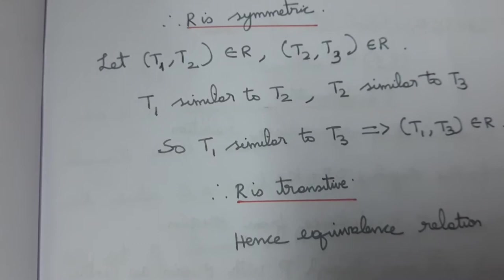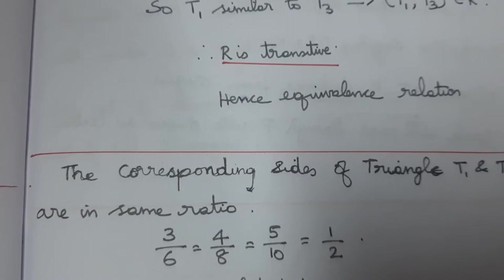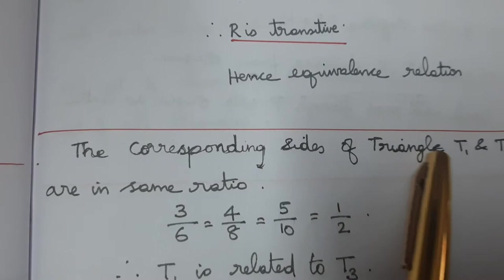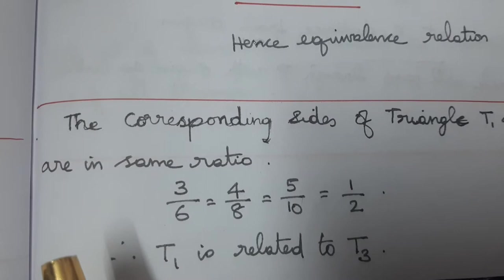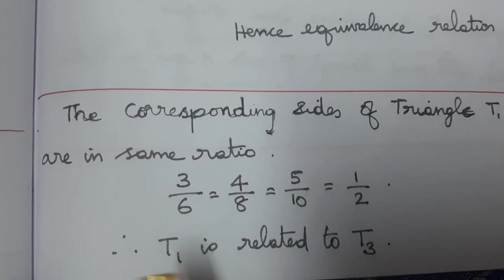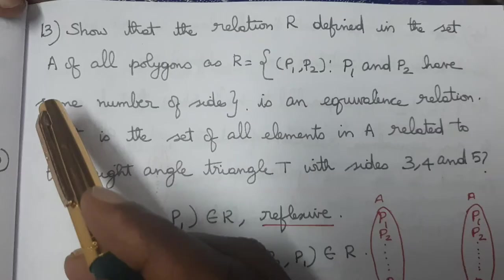Three triangles are related. Triangles T1 and T3 are related because their corresponding sides are in the same ratio. T1 is related to T3, and T1 is similar to T2 — corresponding sides are similar.